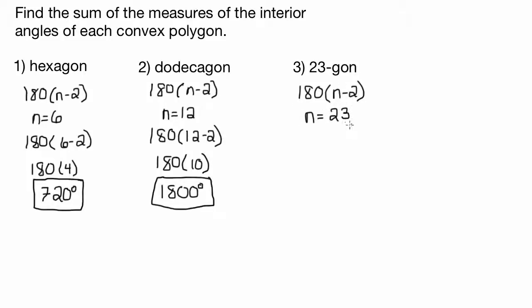Now what you're seeing me do is the same process I always recommend you do for every problem. Formula first, and then write what you know, and then just substitute everything in. So it's just going to be 180 times 23 minus 2, which is going to be 180 times 21, which in this case is going to be 3,780.